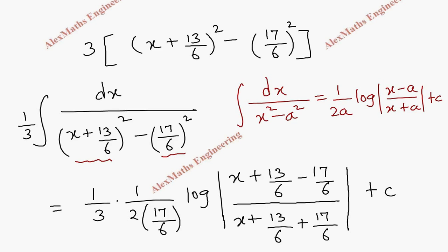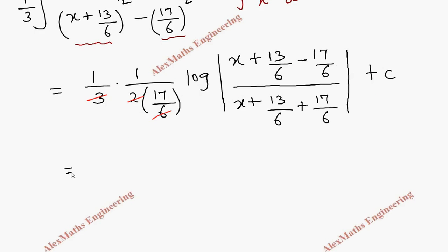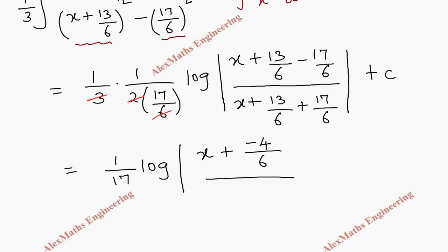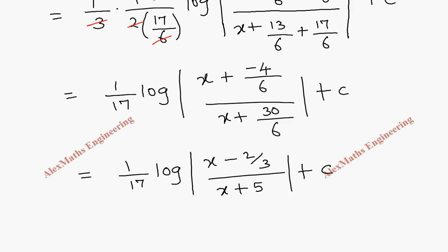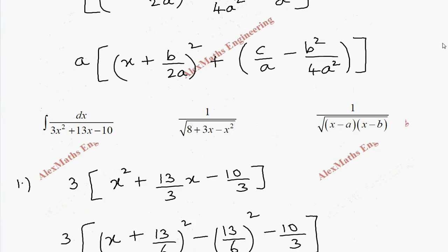After cancelling the threes and twos to get 6, we write 1/17 · log|(x − 4/6) / (x + 30/6)|, simplifying numerator to x − 2/3 and denominator to x + 5. The final answer is (1/17) · log|( x − 2/3) / (x + 5)| + C.